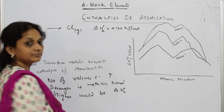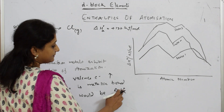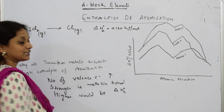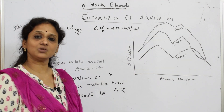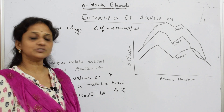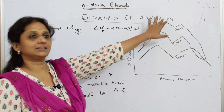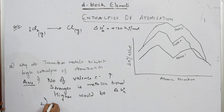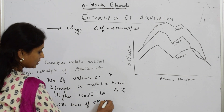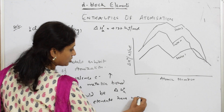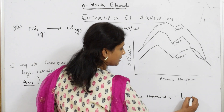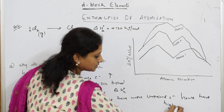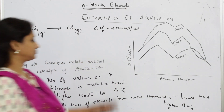In transition elements, the middle of the series elements all have unpaired electrons, which drives the trend in their enthalpies of atomization. The middle of the series elements have more unpaired electrons and hence have higher standard enthalpy of atomization (ΔH°a).